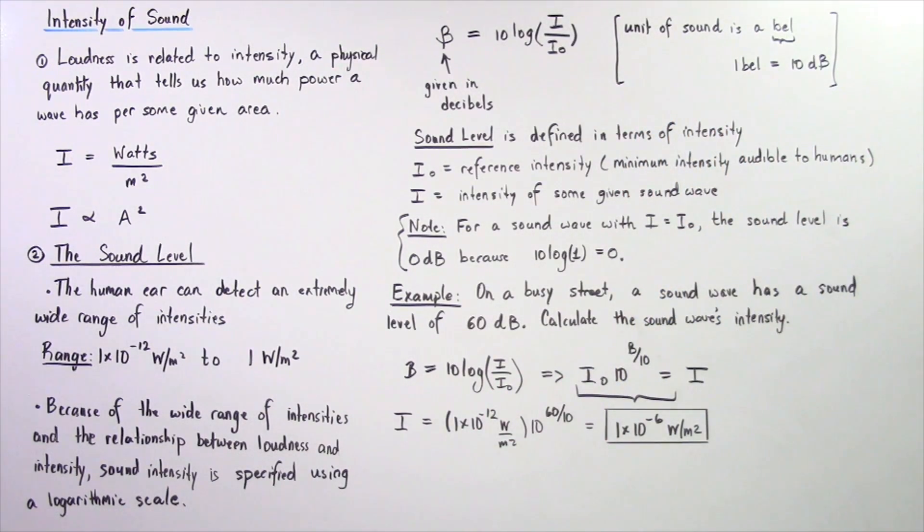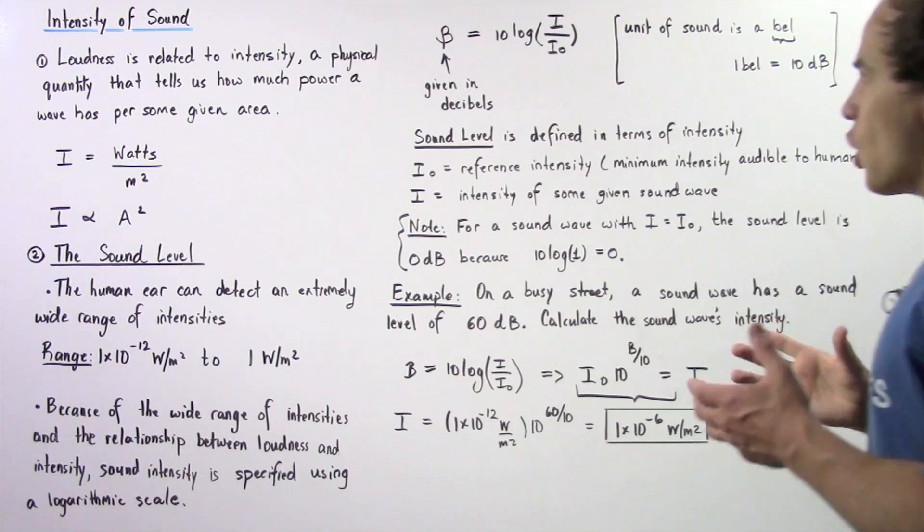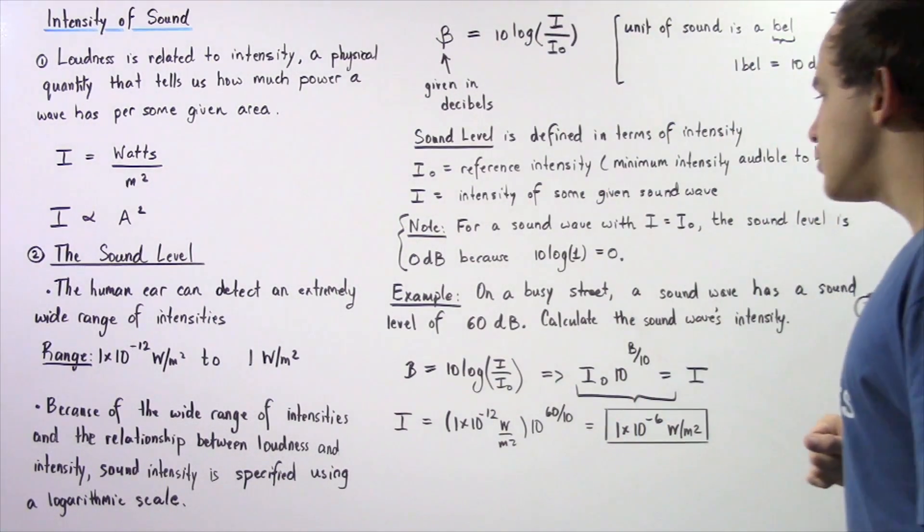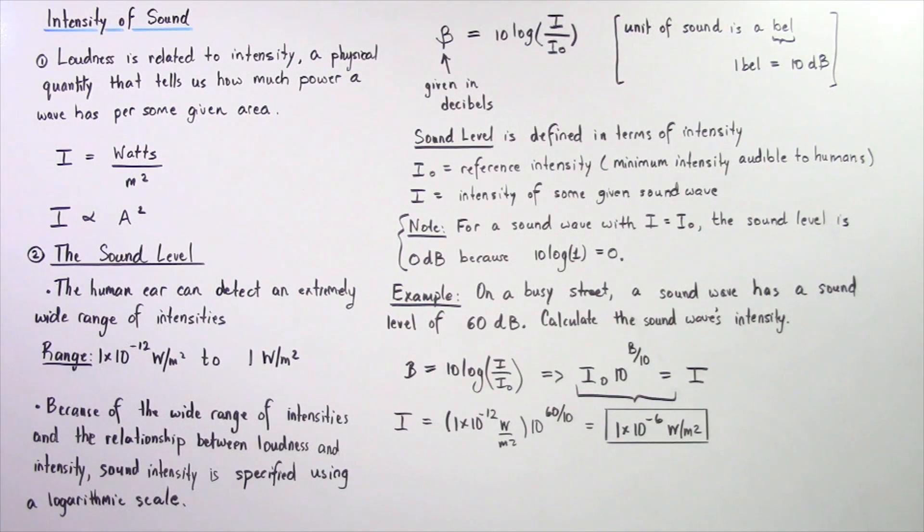Let's examine the following example in which we're going to use this sound level equation. On a busy street, a sound wave has a sound level of 60 decibels. Calculate the sound wave's intensity using the sound level equation.